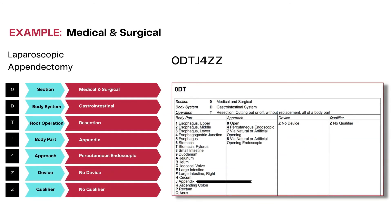This is another example of digestive system procedures. The objective is to remove the appendix in total for a laparoscopic appendectomy, so the root operation selected is resection. We'll talk about all root operations individually and understand their definitions and how they are selected. The approach in this case is percutaneous endoscopic, since all laparoscopic procedures are coded to this approach value in PCS.